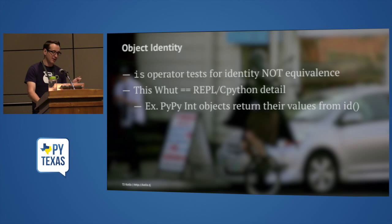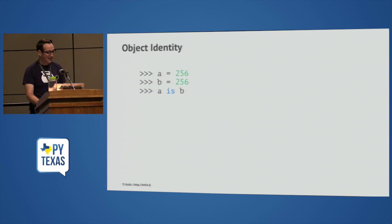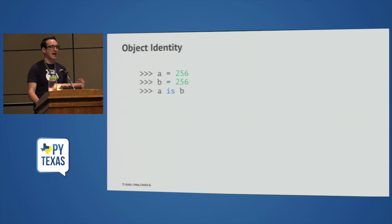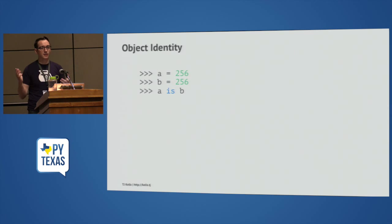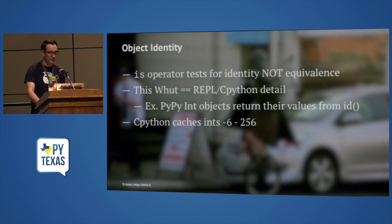Going back to why 1337 is 1337 was false but 256 is 256 is true — when CPython starts up, it caches a bunch of integers. It caches what it considers commonly used integers, which are negative 5 to 256. So those values are constructed when CPython starts and cached the whole time CPython is running. That would not work the same way in PyPy, which is a CPython-specific detail.